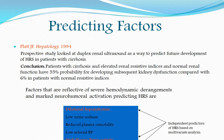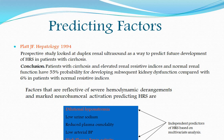Since renal vasoconstriction is the main pathophysiologic mechanism for HRS, a duplex ultrasound of the kidney measuring resistance indices can be a predicting factor. A study published in Hepatology in 1994 showed that patients with elevated renal resistance indices were more likely to develop HRS compared to those with normal resistance indices and normal kidney function. However, this is a cumbersome, lengthy study requiring a skilled technician.